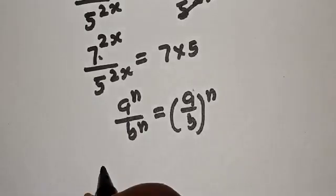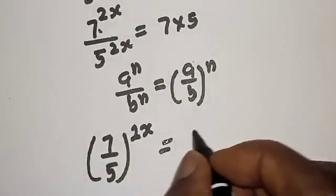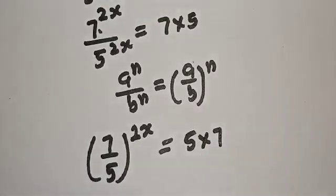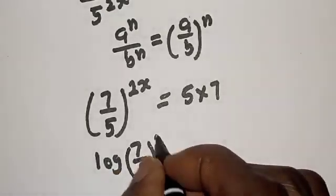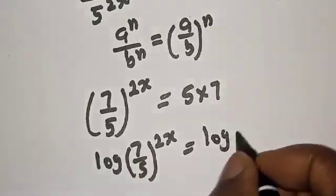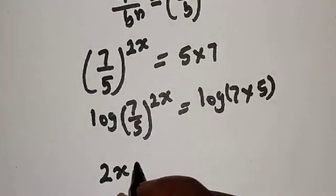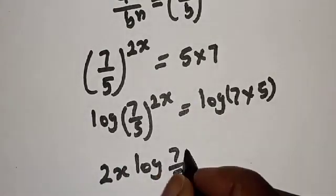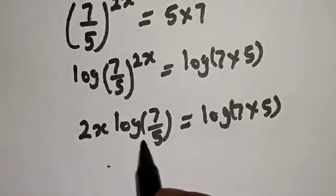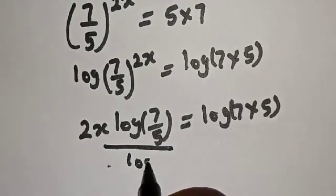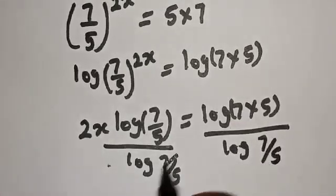Then, this becomes 7 over 5 raised to power 2s is equal to 5 multiplied by 7. Now, let's take the log of both sides: log of 7 over 5 to the power of 2s is equal to log of 7 times 5. Then, this is 2s times log of 7 over 5 is equal to log of 7 multiplied by 5. Let's divide both sides by log 7 over 5. This one will cancel this.